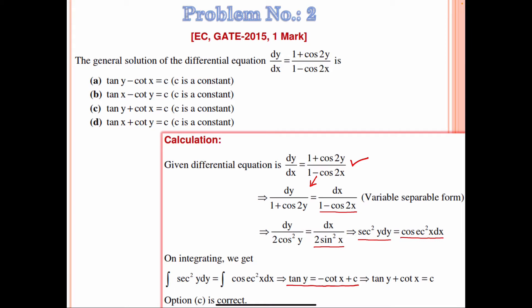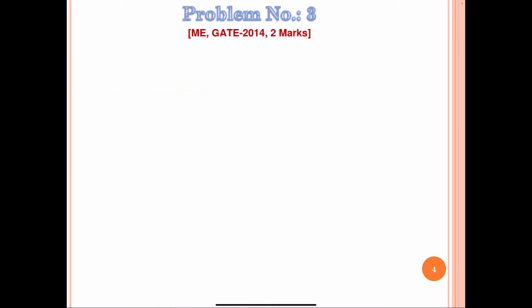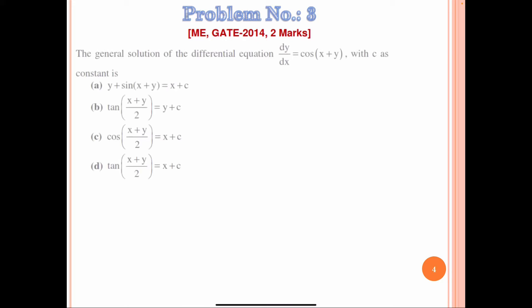This means tan y + cos x = c. So option C is correct.